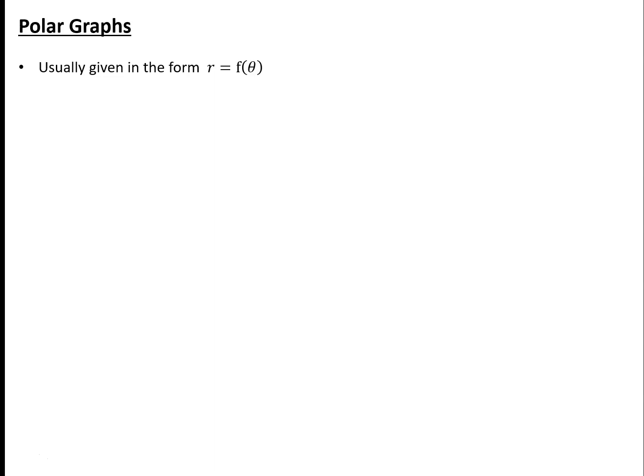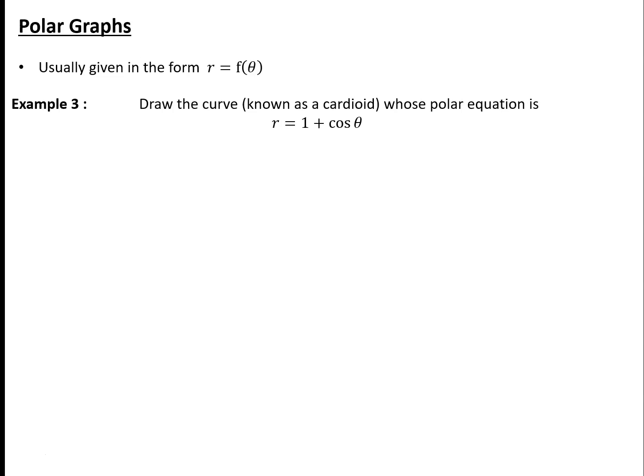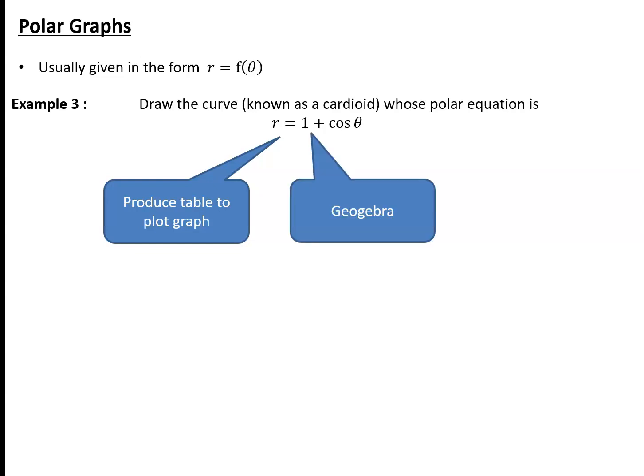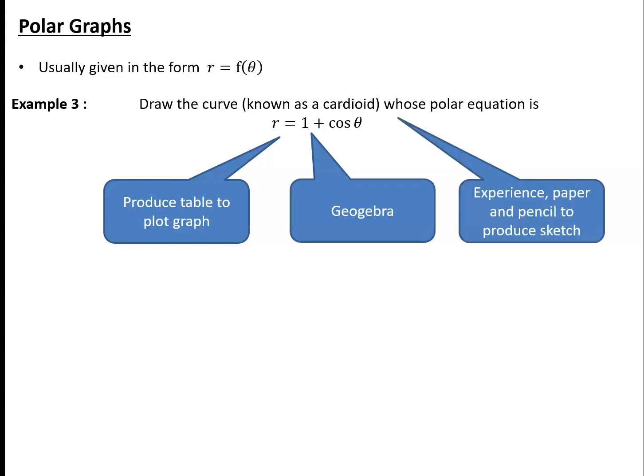Now we'll look at how to use polar coordinates to produce polar graphs. Polar graphs are usually given in the form r = f(θ). Let's look at how to draw the curve known as a cardioid, whose polar equation is r = 1 + cos θ. There are several approaches: produce a table of values to plot the graph, use Geogebra, or eventually build up enough experience to produce a sketch with pencil and paper.